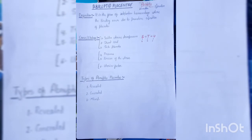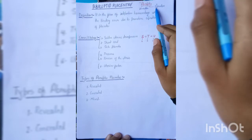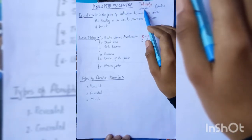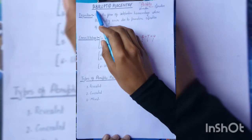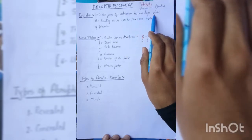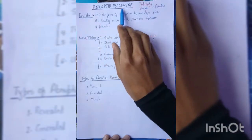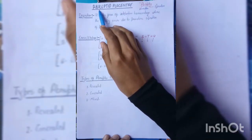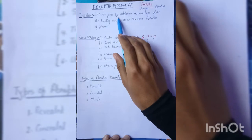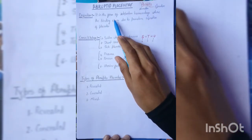Now let's look at abruptio placenta. 'Ab' means premature and 'ruptio' means separation. So it is premature separation of the placenta. It is a form of antepartum hemorrhage where bleeding occurs due to the premature separation of the placenta.